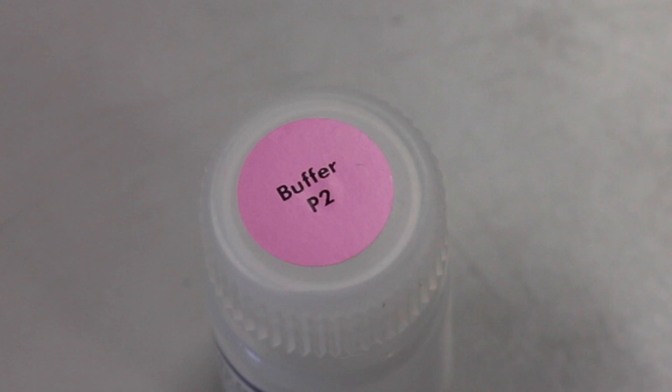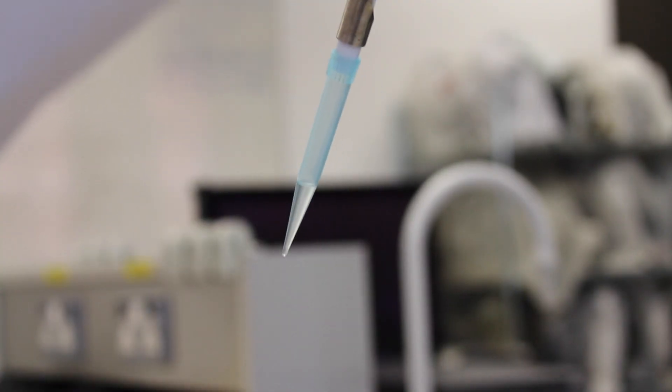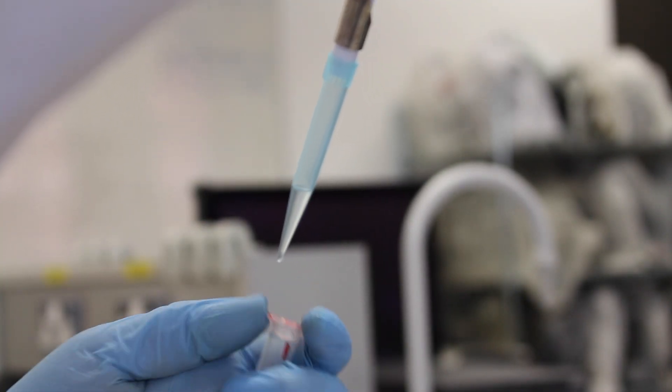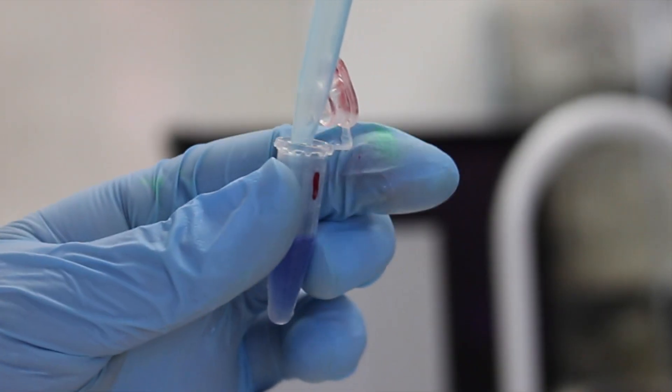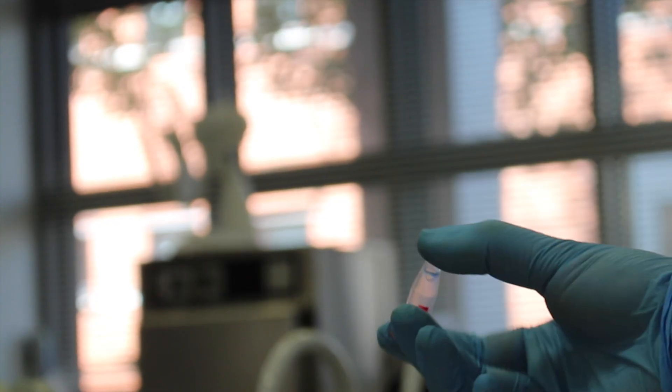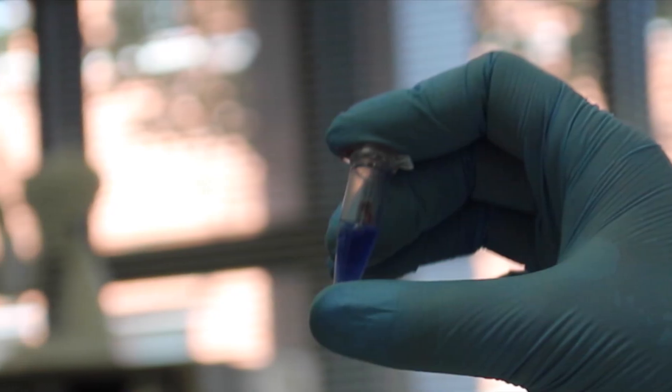The cells are then lysed with 250 microliters of buffer P2. This buffer contains potassium acetate which allows the plasmid DNA to remain in solution while the other cellular components are precipitated. The color changes from cloudy to blue. The tubes are inverted gently. The reaction is left to proceed for 5 minutes.